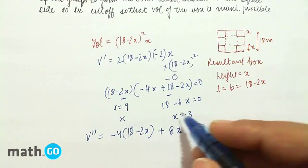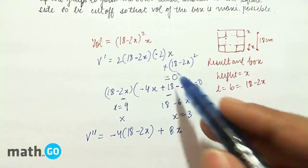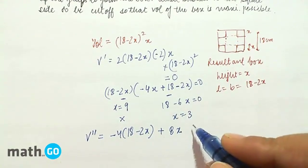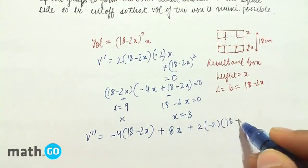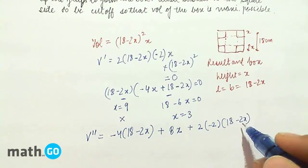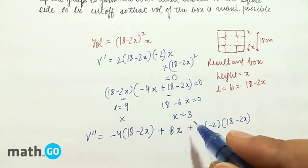Plus we get 8x, and this differentiation will get 2 into minus 2, (18-2x). Now, we keep x equals to 3.